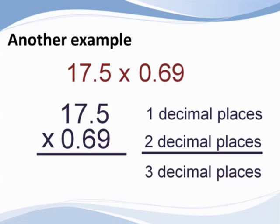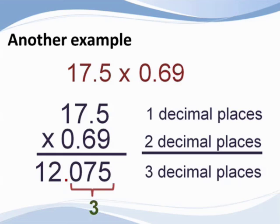The product of the numbers is one, two, zero, seven, five. Placing the decimal point so that there are three decimal places provides a product of twelve and seventy-five thousandths.